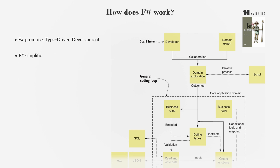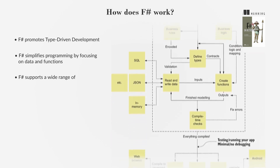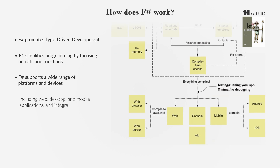F-Sharp simplifies programming by focusing on data and functions, eliminating complex object-oriented concepts. It also encourages the separation of business logic from external systems, enhancing testability and maintainability. F-Sharp supports a wide range of platforms and devices, including web, desktop, and mobile applications, and integrates seamlessly with the .NET ecosystem, offering access to numerous libraries and cloud services.